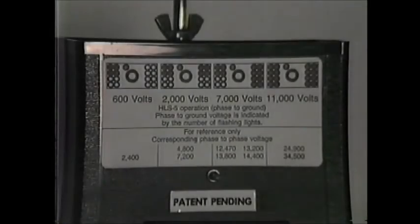The label supplied with the HLS 5 indicates the voltage levels for each one of the banks of lights. It also lists for reference purposes the corresponding system voltages.